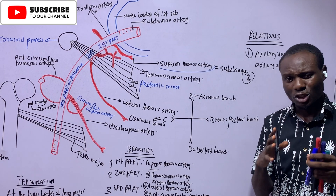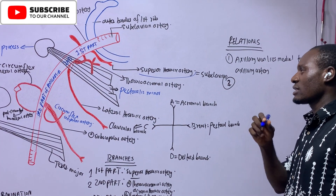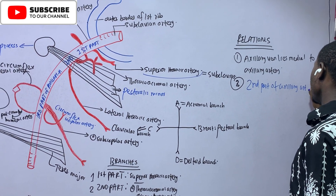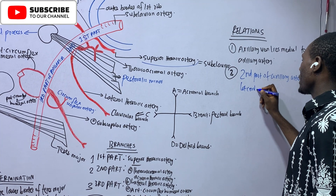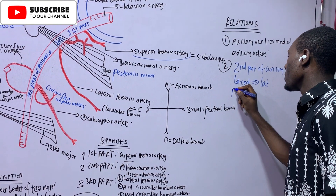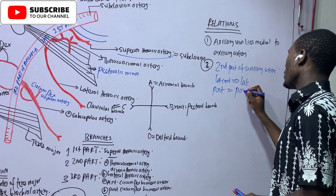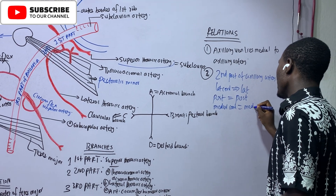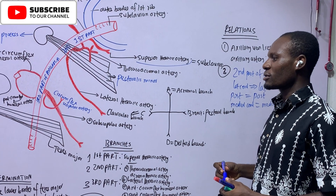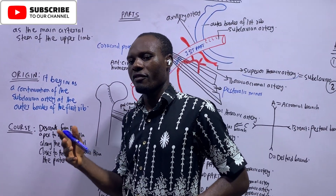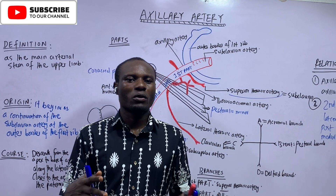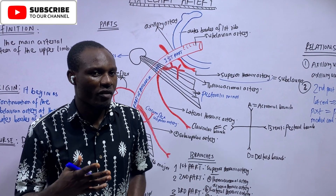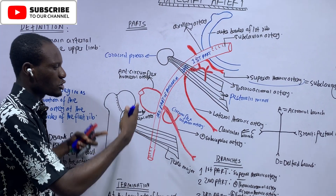With respect to the second part of the axillary artery: the lateral cord of the brachial plexus lies lateral to it, the posterior cord of the brachial plexus lies posterior to it, and the medial cord of the brachial plexus lies medial to it. Clinical correlates include spontaneous thrombosis of the axillary vein, injury to the axillary artery, and the pulsation of the axillary artery which can be felt in the axilla.